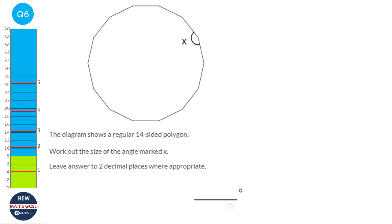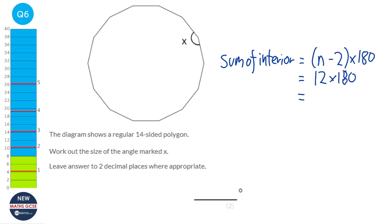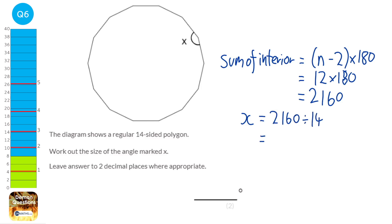To find the angle marked X, we need the formula: the sum of interior angles equals (number of sides minus 2) times 180. This polygon has 14 sides, so it's 14 minus 2, which is 12 times 180. On the calculator we get 2,160. That's the sum of all angles, so to find X we divide 2,160 by 14, giving 154.285... Rounded to two decimal places, the answer is 154.29.